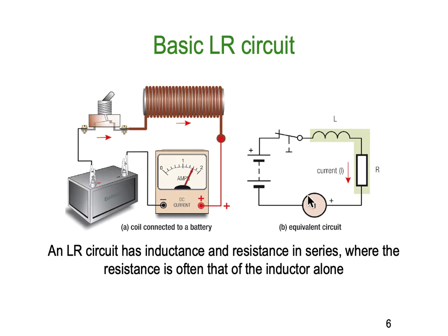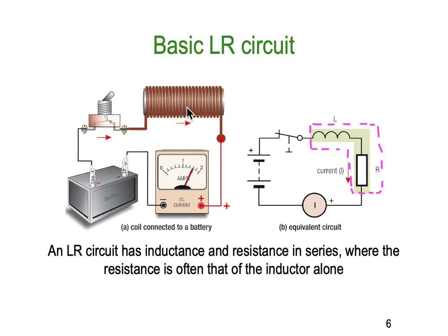The RL circuit has inductance and resistance in series, where the resistance is often that of the inductor alone. We often draw dotted lines around the inductor and the resistor component to indicate that the resistor is an embedded part of the component — the difference between an ideal inductor and a practical inductor. Once the magnetic field builds up in the first couple of microseconds and is established, it's no longer moving and has no further effect. After that, the only thing restricting current is the internal resistance of the wire with which the inductor is made.